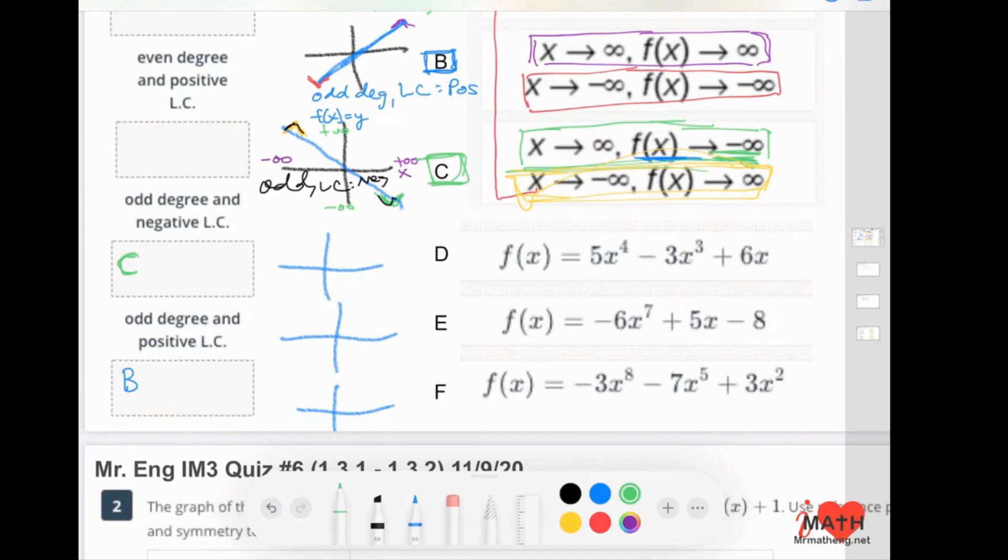D, E, and F now are, just write this out here in green, these are called higher degree polynomials. Let's just do D here. Here's my degree. This is an even degree. And the leading coefficient here, there's no symbol of negative, so it's going to be a positive.